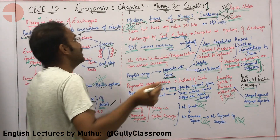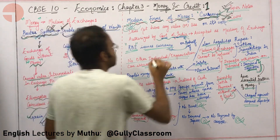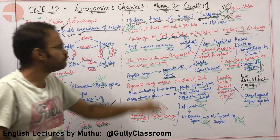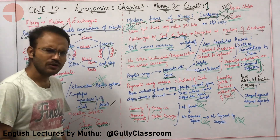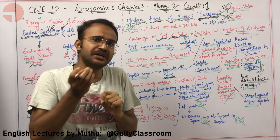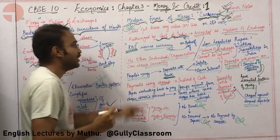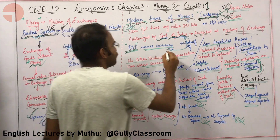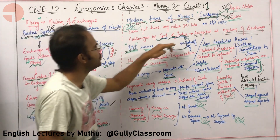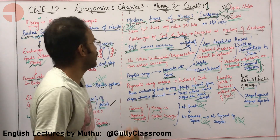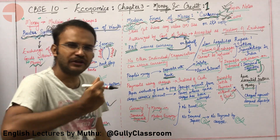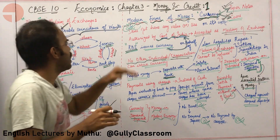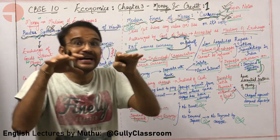Then who is giving this value? The paper note currency has value because it is authorized by the Government of India as the accepted and legal medium of exchange in our country. Who is responsible for issuing these currency notes? RBI — the Reserve Bank of India — is issuing money on behalf of the Government of India. RBI holds the sole responsibility of issuing money; no other organization or individuals can issue money.